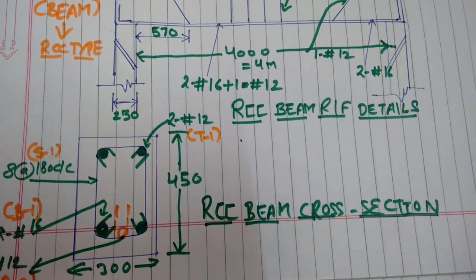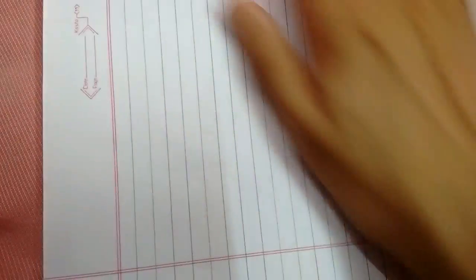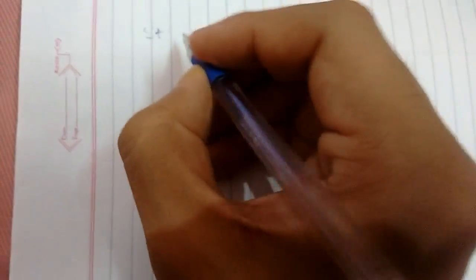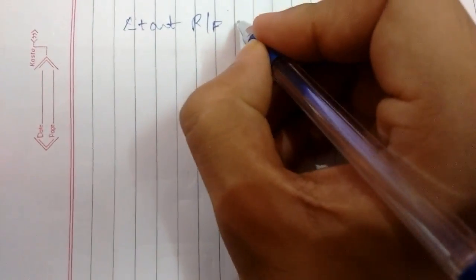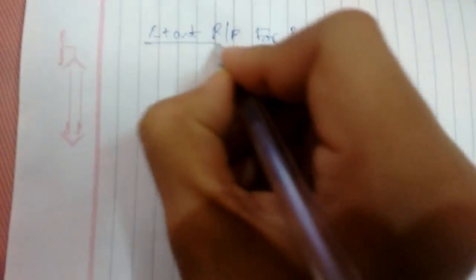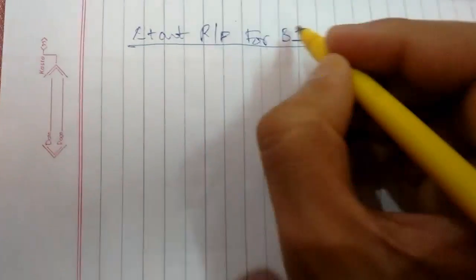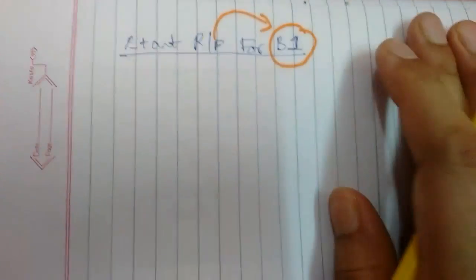That is B1 as shown below. So I'm going to start a new page, start reinforcement for B1. If you see, we are calculating reinforcement for B1, so bar shape will be for this.